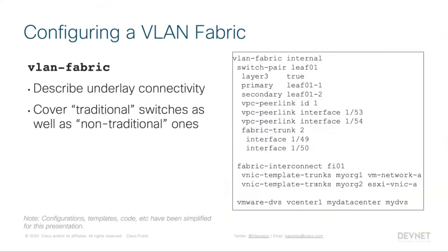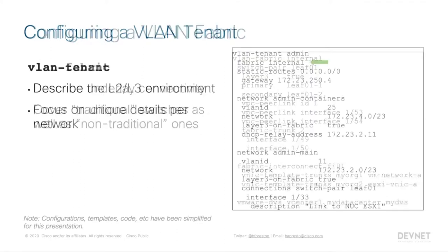The idea behind the service is I don't want to manage switch by switch, device by device, interface by interface — I want to manage in this network service structure. Here is a snippet of what an actual VLAN fabric looks like when pushed into NSO: it describes a name, a set of switch pairs composing the VLAN fabric, all fabric trunk links, and then ties back to fabric interconnects and VMware DVS to define what's part of a single VLAN fabric.